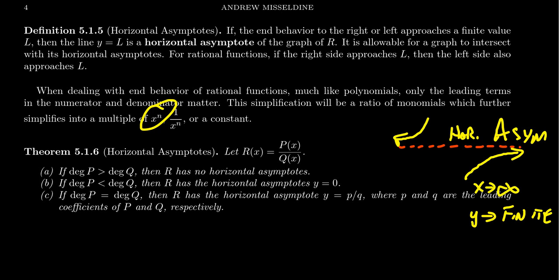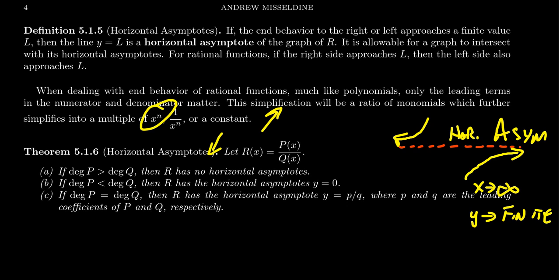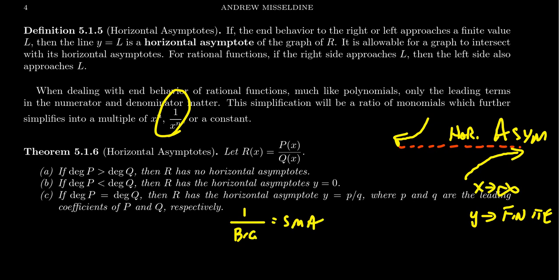If you have a monomial x to the n, as x goes towards infinity it's going to point up, and as x goes to negative infinity it'll point down or up depending on whether it's even or odd. The reciprocal function 1 over x to the n is going to do something similar. As x goes towards infinity, x to the n gets really, really big, and if you have 1 over a big number, this is actually equal to a small number. So as x goes towards infinity, 1 over x to the n is going to go towards 0.